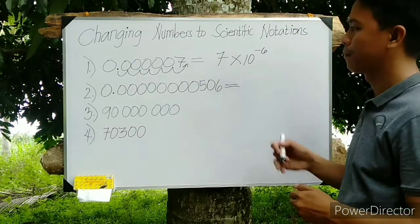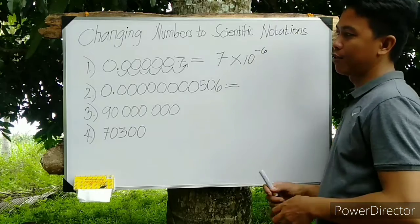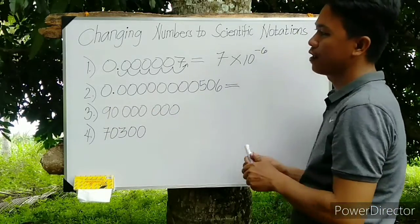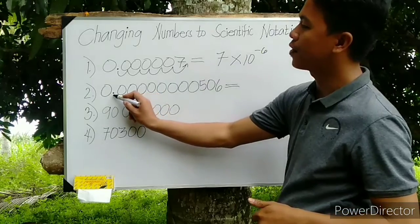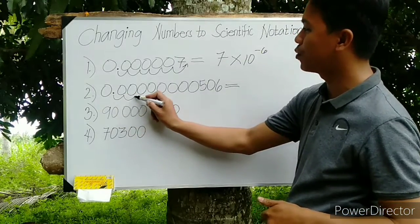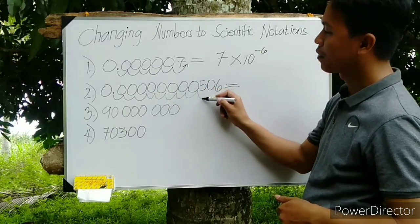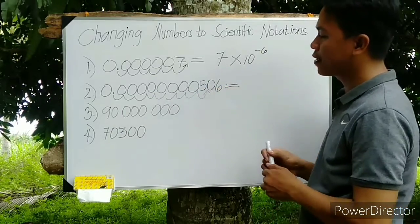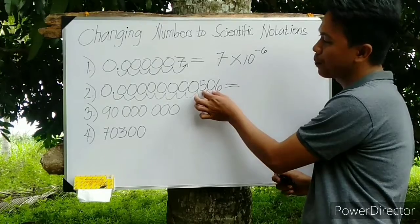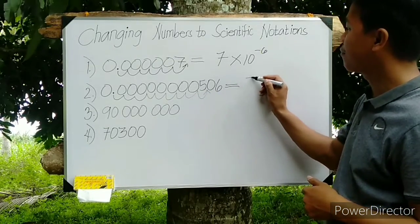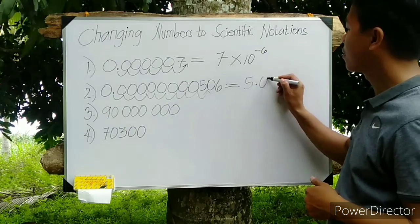For number 2, the movement is still coming from left to right. So let's start here from the decimal. Let's move: 1, 2, 3, 4, 5, 6, 7, 8, 9. So we will end here between 5 and 0, so that the value of A will become 5.06.